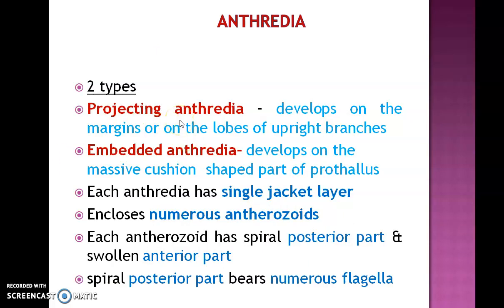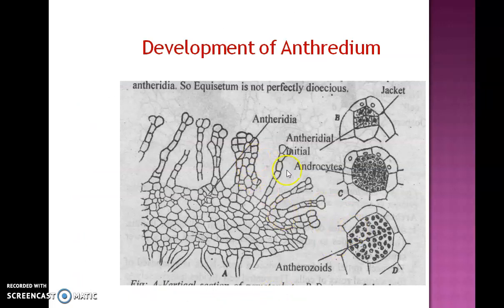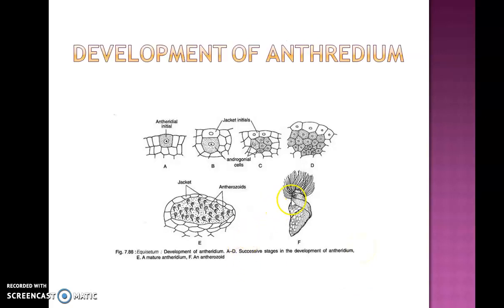Antheridia of Equisetum are of two different types: projecting antheridia and embedded antheridia. Projecting antheridia are seen on the lobes of upright branches, while embedded antheridia are embedded in the cushion-shaped lower part of the prothallus. Each antheridium is surrounded by a single-layered jacket for protection, enclosing numerous antherozoids inside it. Each antherozoid has a spiral posterior part and a swollen anterior part, with the posterior part bearing numerous flagella.